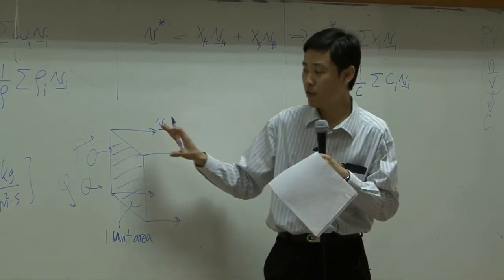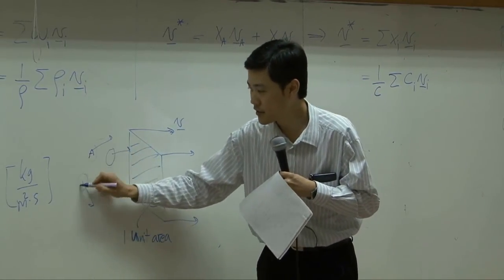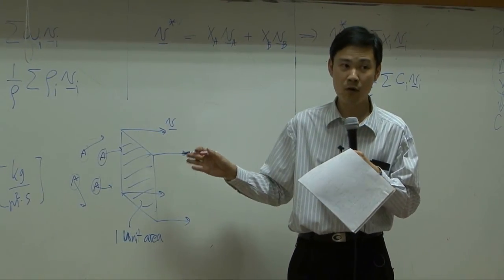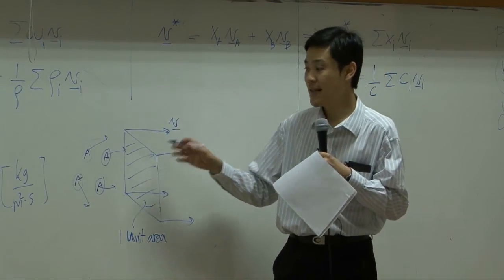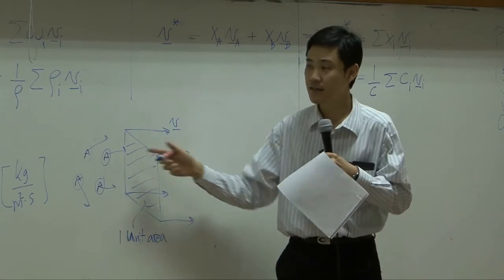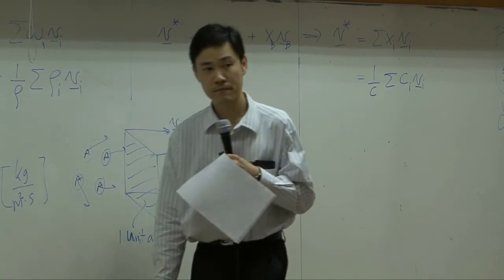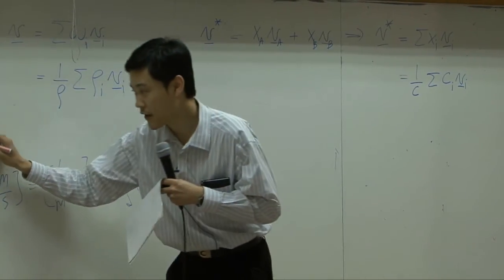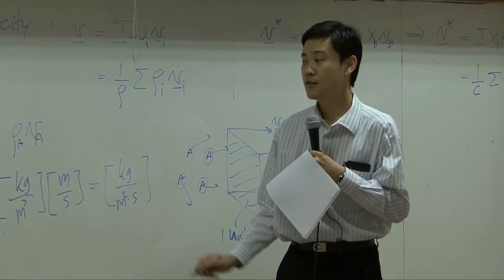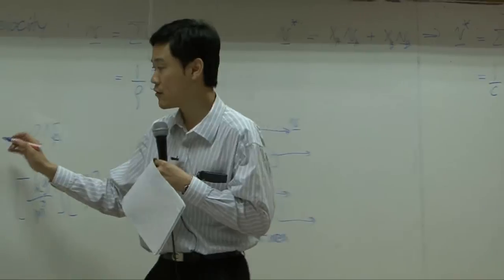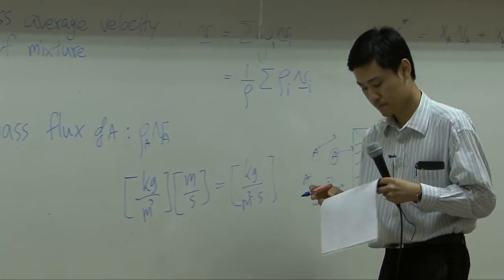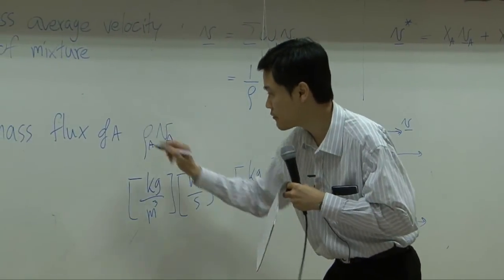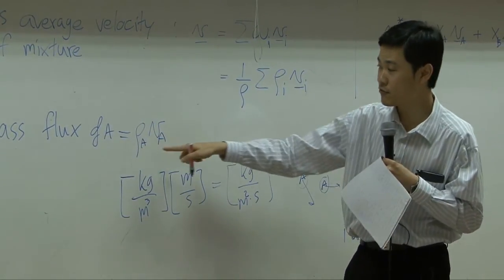Suppose my molecules here are molecules of A, and you count only molecules of A. The density or concentration of A is represented by rho_A. The velocity would be the velocity of its own molecules, so velocity of A. When they combine together, the mass flux that you observe would be the mass flux of A. So I can write: mass flux of A equals rho_A times V_A.